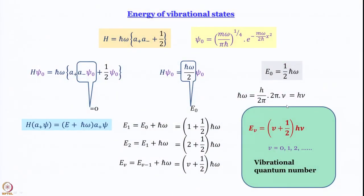Interestingly, a quantum harmonic oscillator absorbs light whose frequency matches its own vibrational frequency. So we have the expression E_V = (V + 1/2)·hν — we know the expression for the energy of all vibrational energy levels of the quantum harmonic oscillator. But until now we know only one wave function: ψ_0 = (mω/πℏ)^(1/4) · e^(−mωx²/2ℏ).